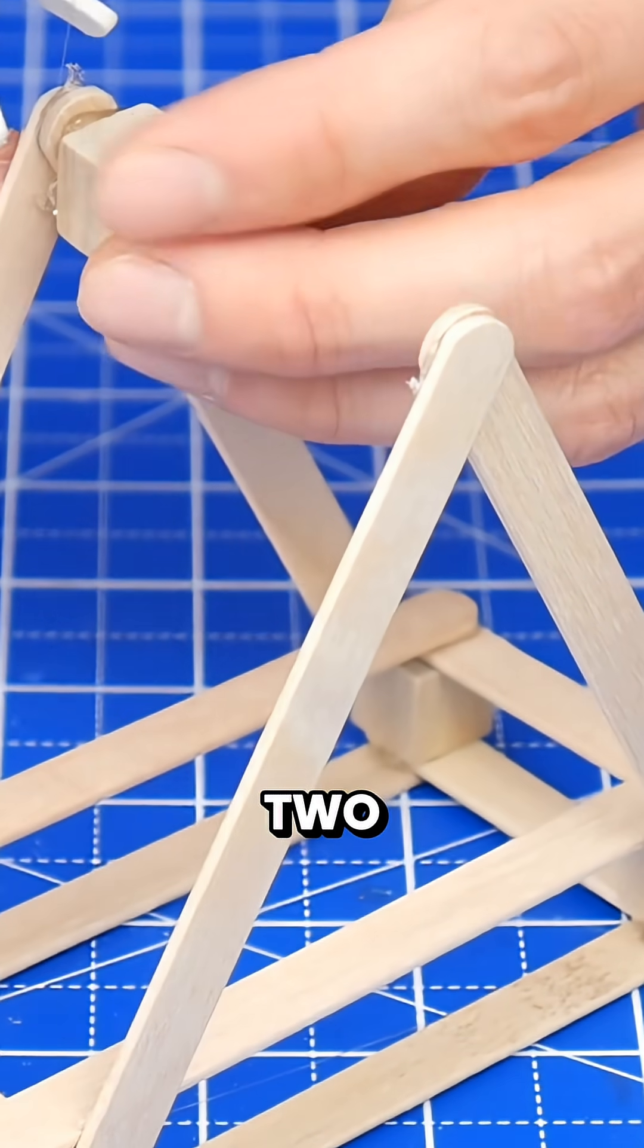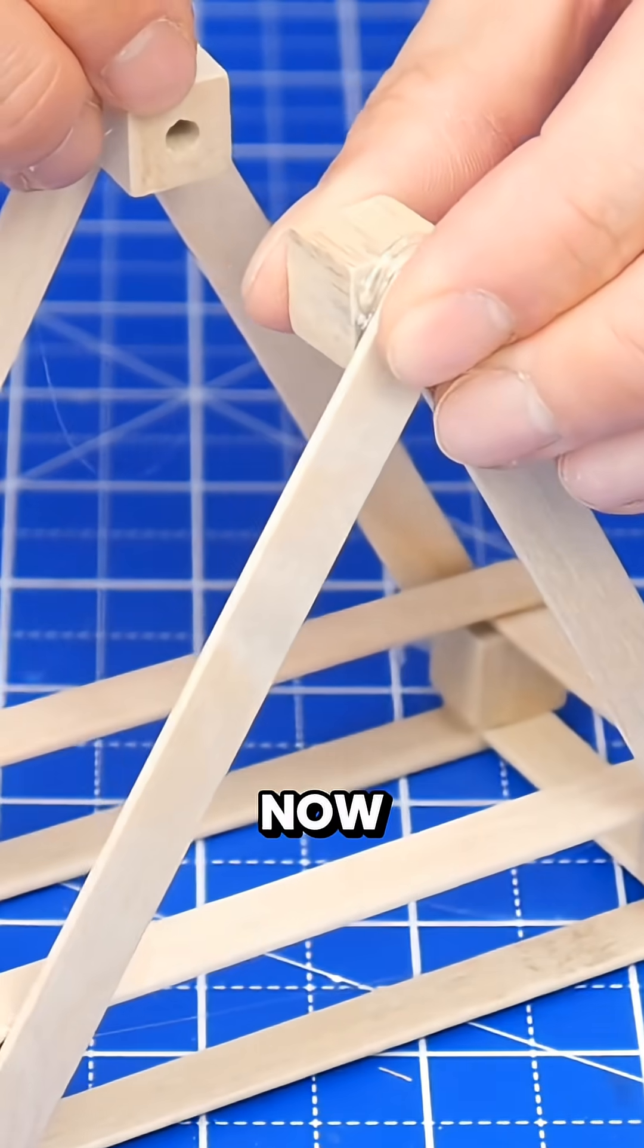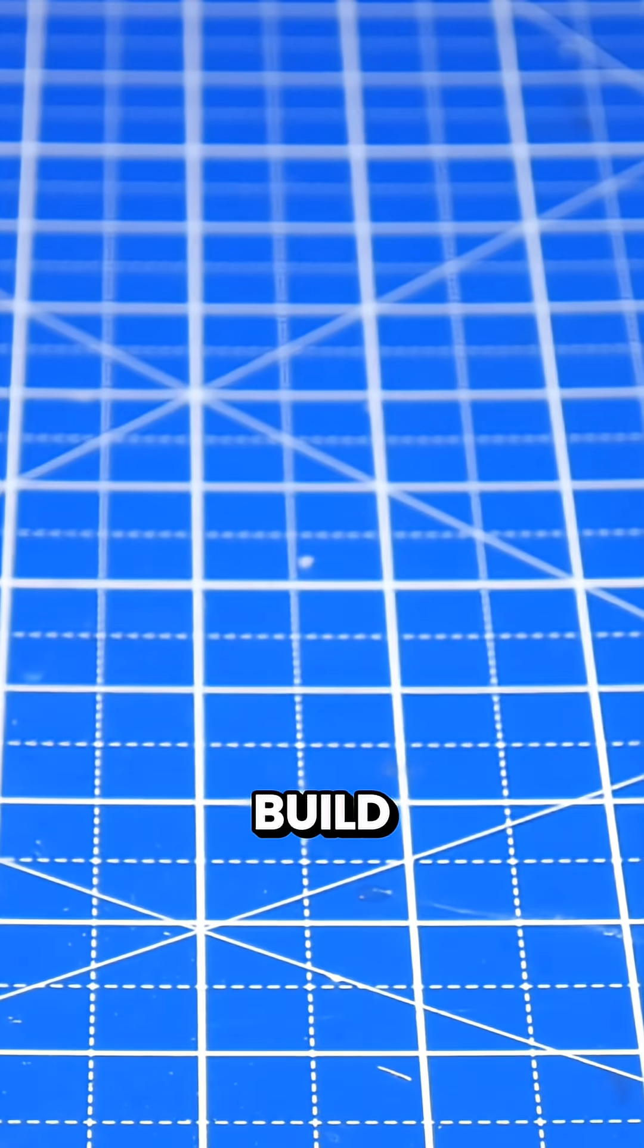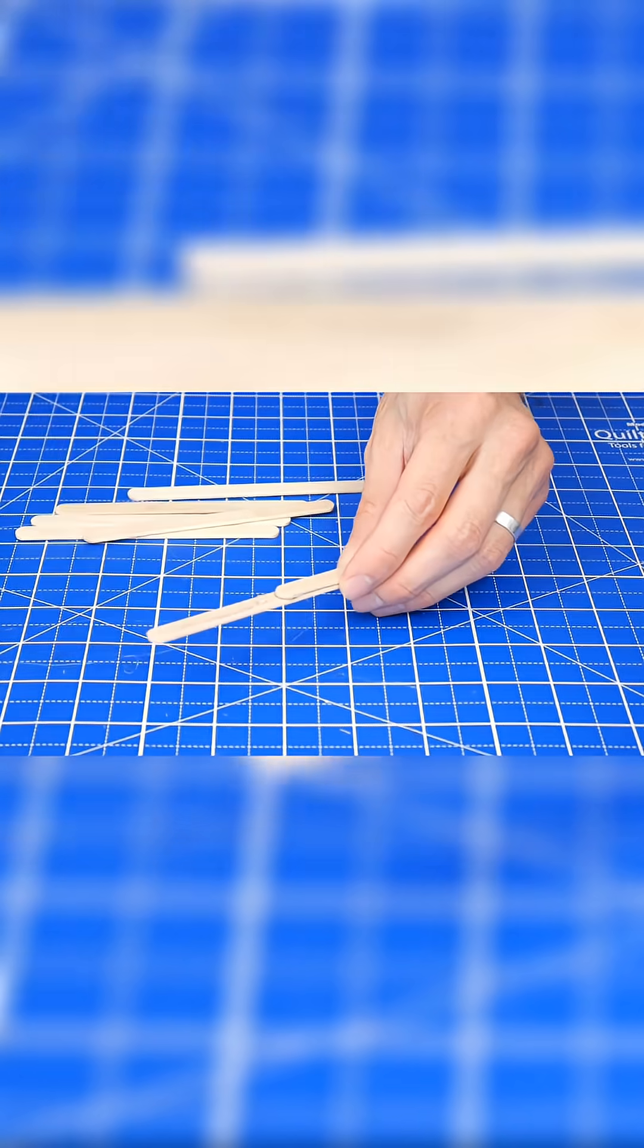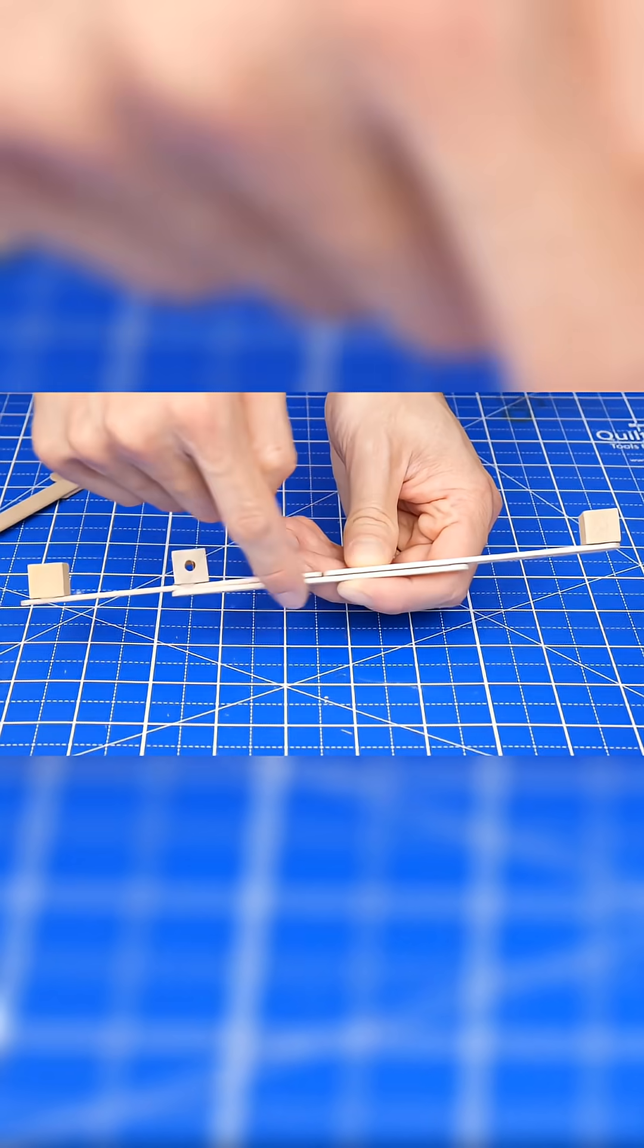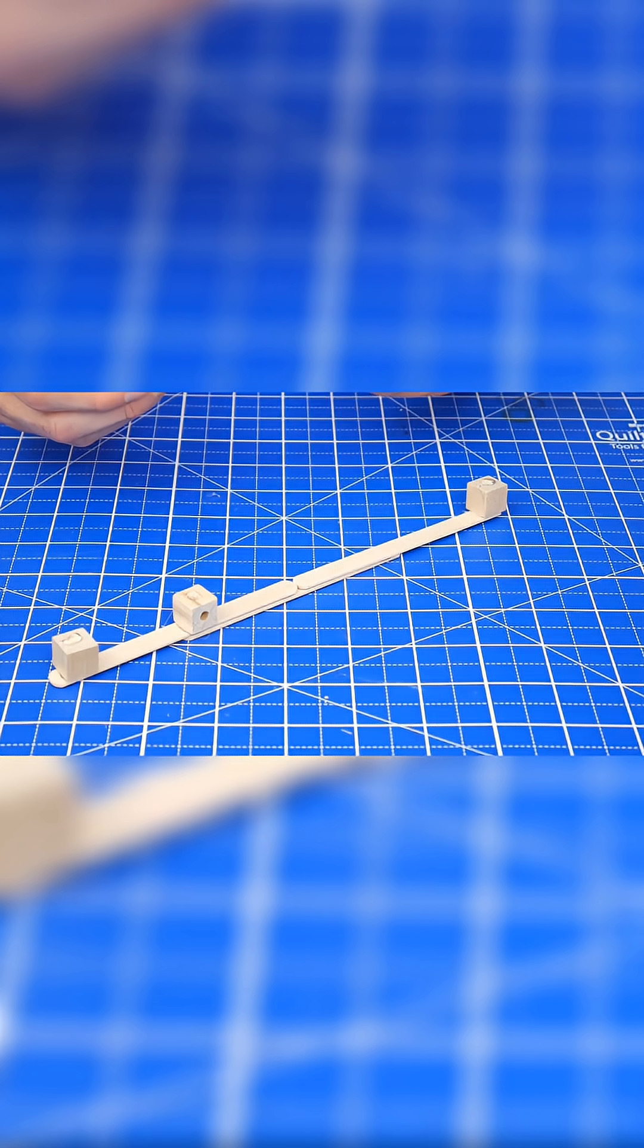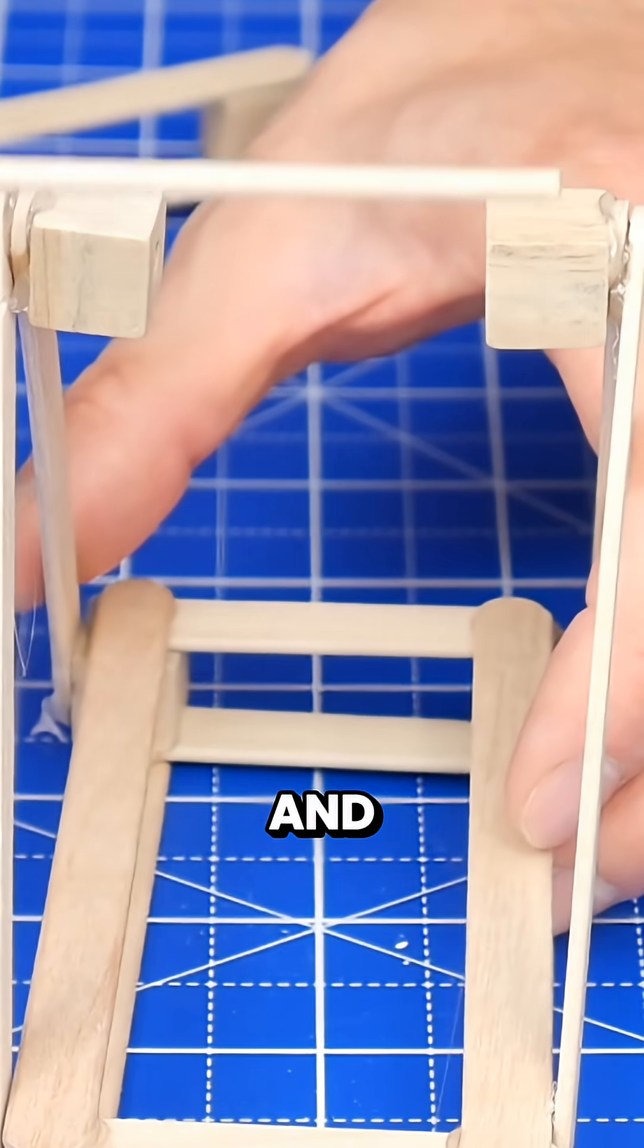Start the hinge by gluing two cubes with holes to the tops of these side supports. Now set this aside and we're going to build the catapult arm. Next, glue the other beam on top of those cubes, get a dowel and